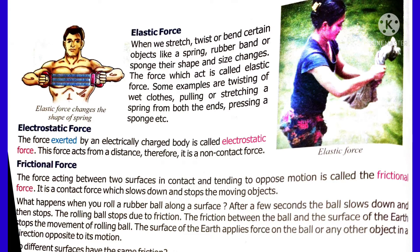Now we move on to Activity 3, which is to observe whether different surfaces have different friction. Frictional force is an example of contact force, which opposes motion and exists in the opposite direction of motion. When you throw or roll a ball on the floor, after a few seconds it automatically stops. What made it stop? It is because of friction — friction exists between the floor and the ball surface, and due to friction, the ball stops.